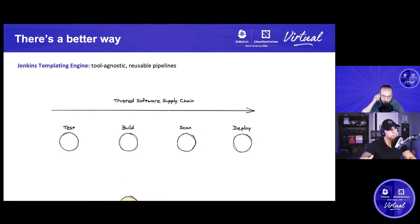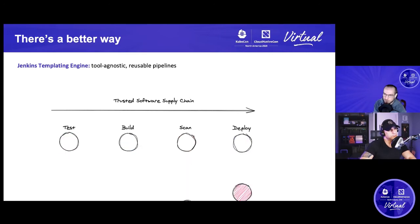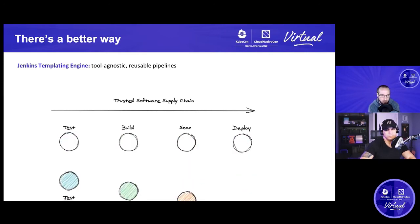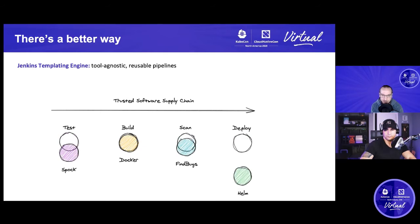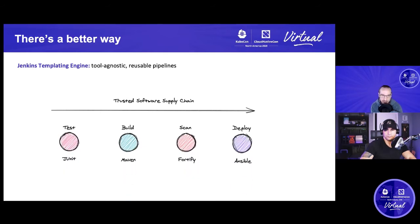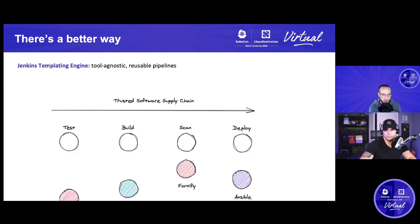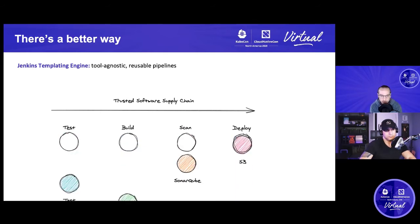The Jenkins Templating Engine allows you to take that pipeline definition out of each individual source code repository, define it in one place in tool-agnostic terms, and then plug and play with which specific tool will implement the steps of that agnostic process. We've got test, build, scan, deploy — and that same scaffold can be reused across every team, just swapping out which tool implements those steps.